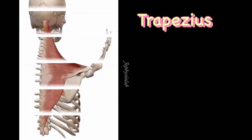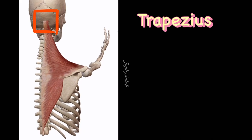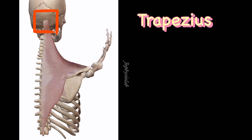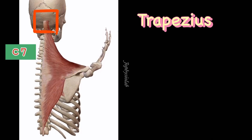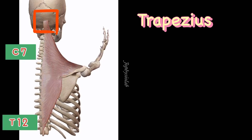The trapezius muscle attachment starts from the occipital bone and ligamentum nuchae to C7 to T12 spinous processes of the vertebrae. Trapezius inserts from the lateral third of the clavicle to the acromion and spine of the scapulae.